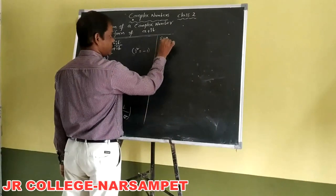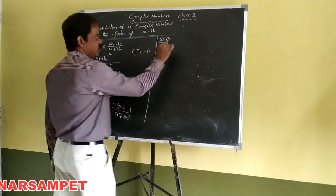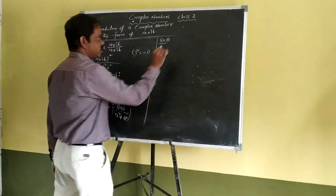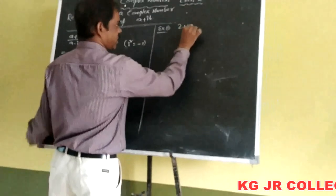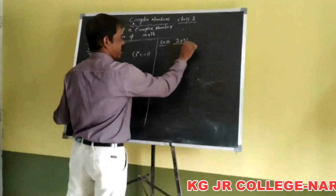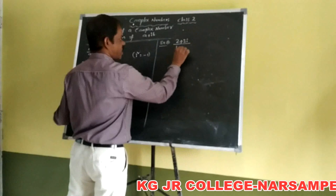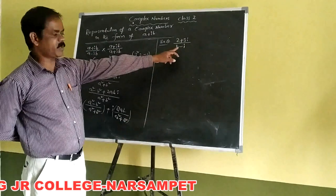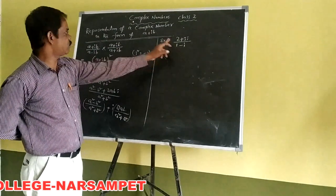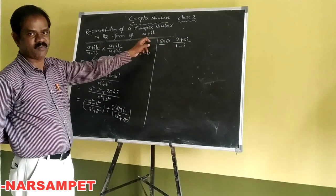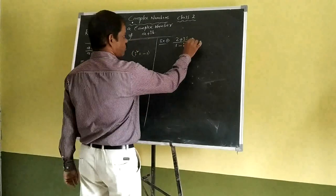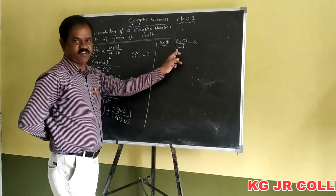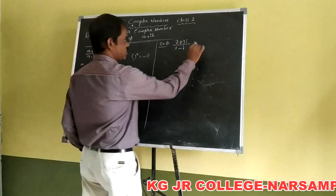Example number 1: we have the fraction (2 + 3i) divided by (1 − 5i). We have to represent this complex number in the form of A plus iB. The rationalizing factor of 1 minus 5i is 1 plus 5i.